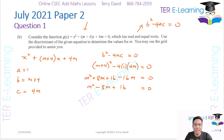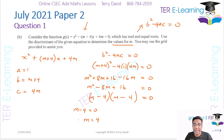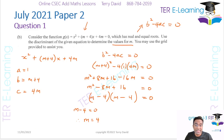We factorize m squared minus 8m plus 16. We get (m minus 4)(m minus 4) equals 0, so (m minus 4) squared equals 0, therefore m equals 4. Even though the question says values of m, there is really just one value. The answer is m equals 4.